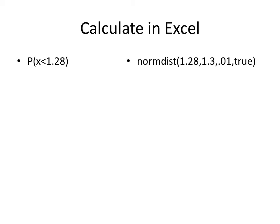Let's figure out in Excel the probability that X is less than 1.28 in our distribution of means. This is the formula you would use. You'll use the 1.28, which is the value we're going for. The mean is 1.3. And as we calculated, the standard deviation we're going to use is 0.01. And since it's cumulatively, we say true. So that's the answer to the first part of the question.